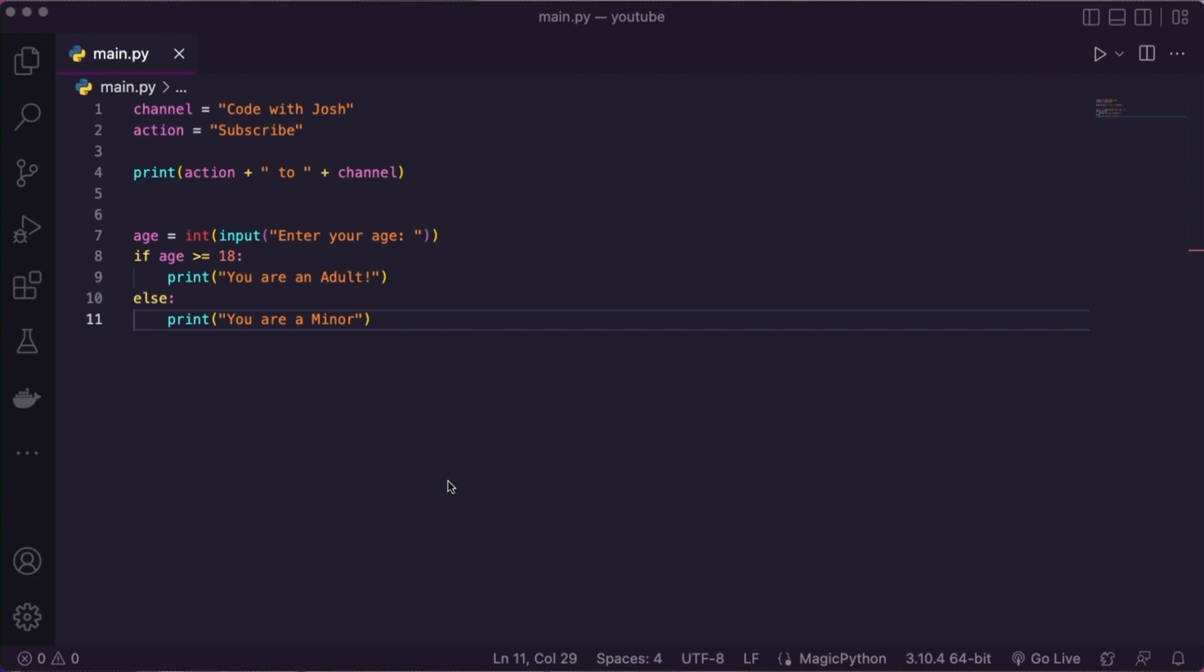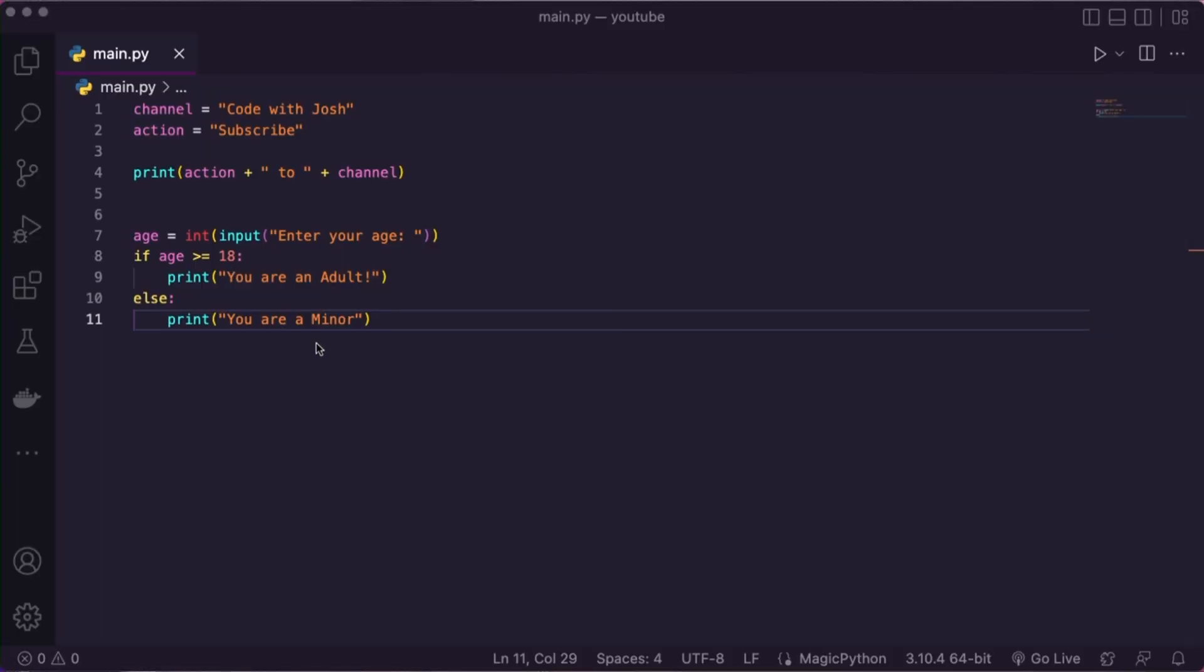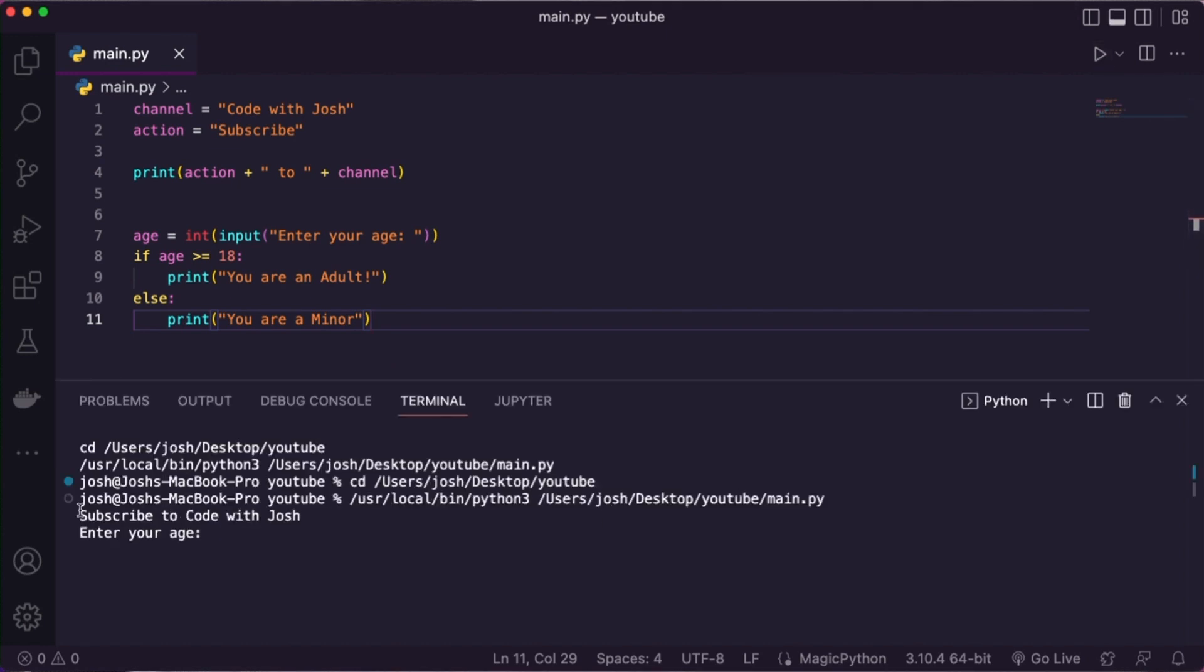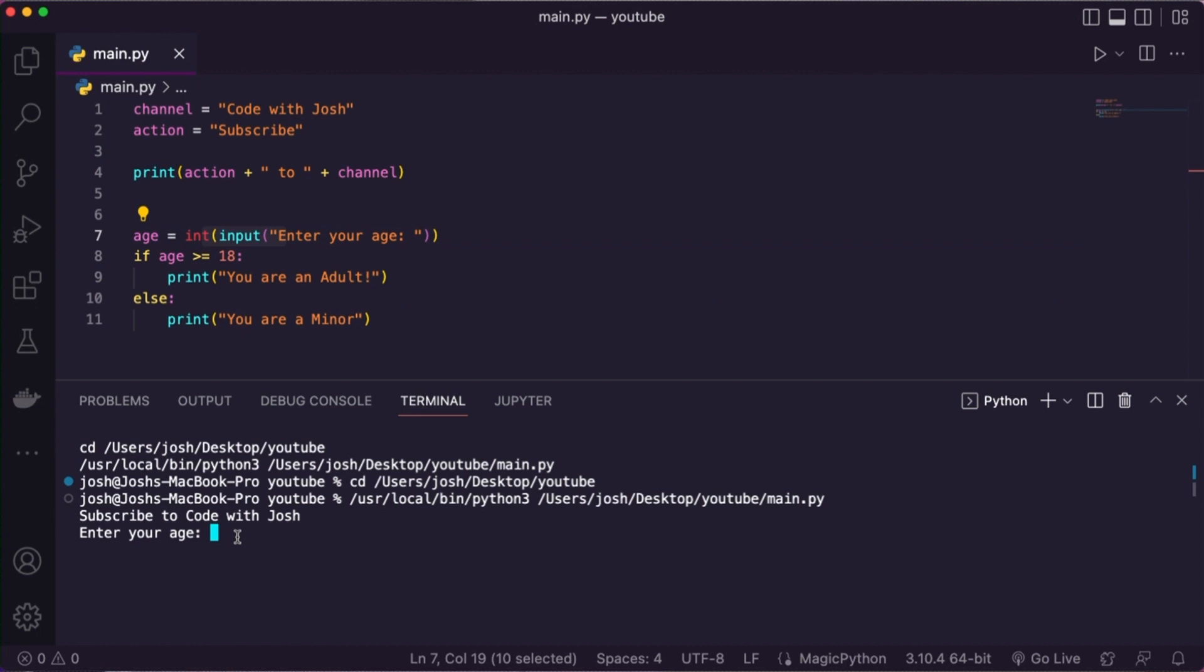That's the basics of a conditional statement. Here's week one all put together. You can see I'm using variables. I'm using functions in my conditional statement. What are my variables? Pause the video and try and take a look. You have channel, action, and age. Now, when I run my code, let's see what we can expect. There you go. Subscribe to Code With Josh. You should be subscribing to Code With Josh if you're ready to learn Python. And then enter an age. It's triggering my input. So I'm going to enter an age. Let's say 26. Enter. It says you are an adult. My condition was true. It was met. That's pretty cool.